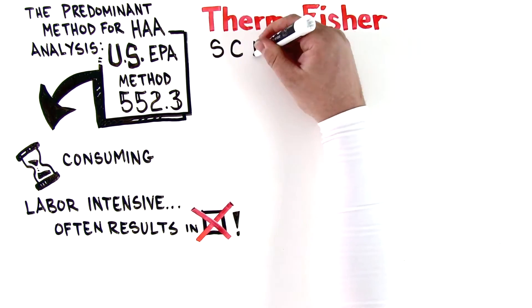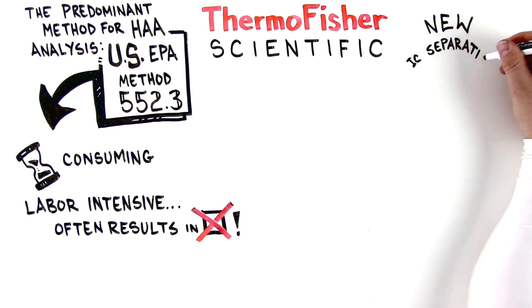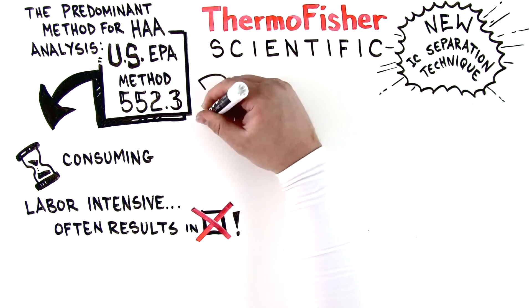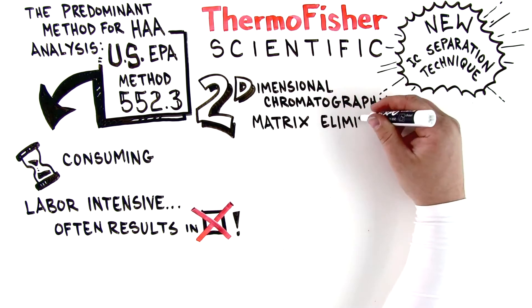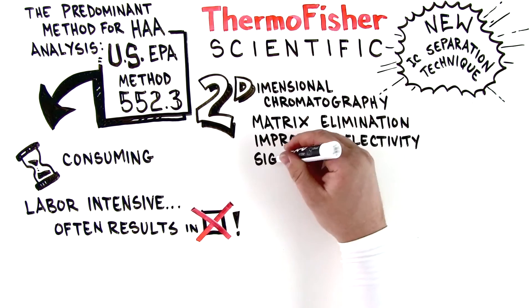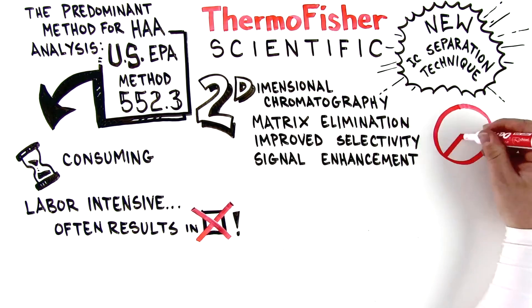Thermo Fisher Scientific has developed a new IC separation technique for haloacetic acid analysis using two-dimensional ion chromatography that provides matrix elimination, improved selectivity, and signal enhancement without sample preparation.